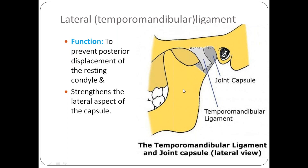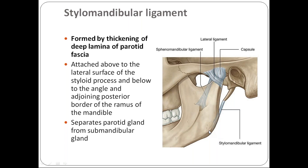There are two accessory ligaments: stylomandibular and sphenomandibular. The stylomandibular ligament is formed by thickening of the deep lamina of the parotid fascia, which is a modification of the deep cervical fascia. It is attached above to the styloid process and below to the angle and posterior border of the ramus of the mandible. Its main function is to separate the parotid gland from the underlying submandibular gland.